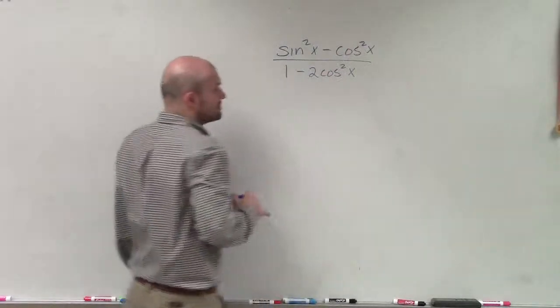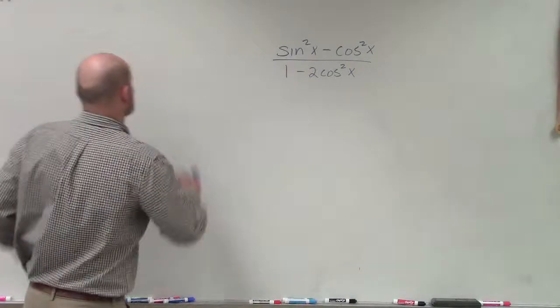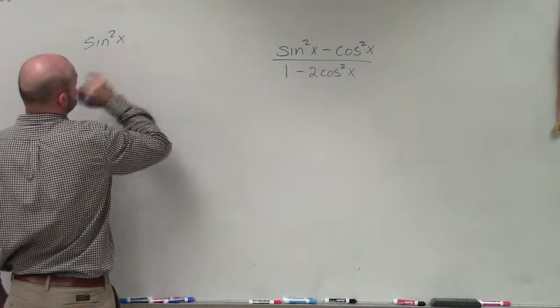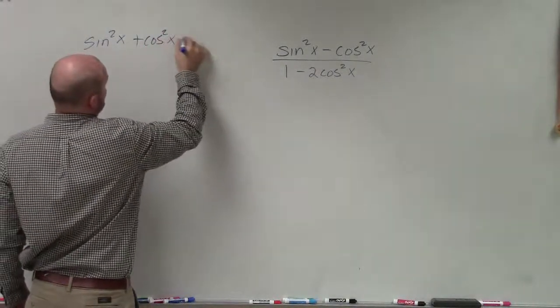Since I already have two terms that are cosine, I'm going to want to convert my sine squared into in terms of cosine squared. So therefore, I have, remember, our Pythagorean theorem, our Pythagorean identity says sine squared plus cosine squared of x equals 1.